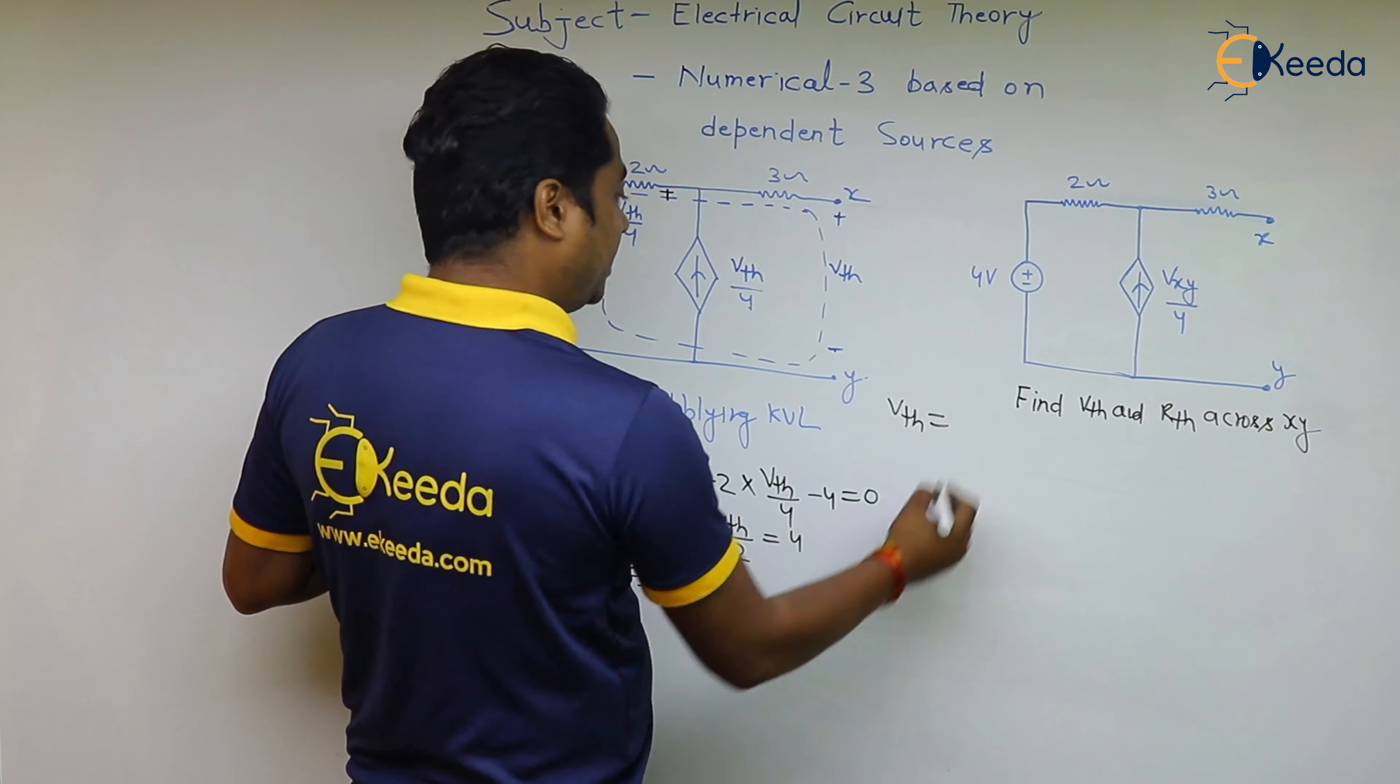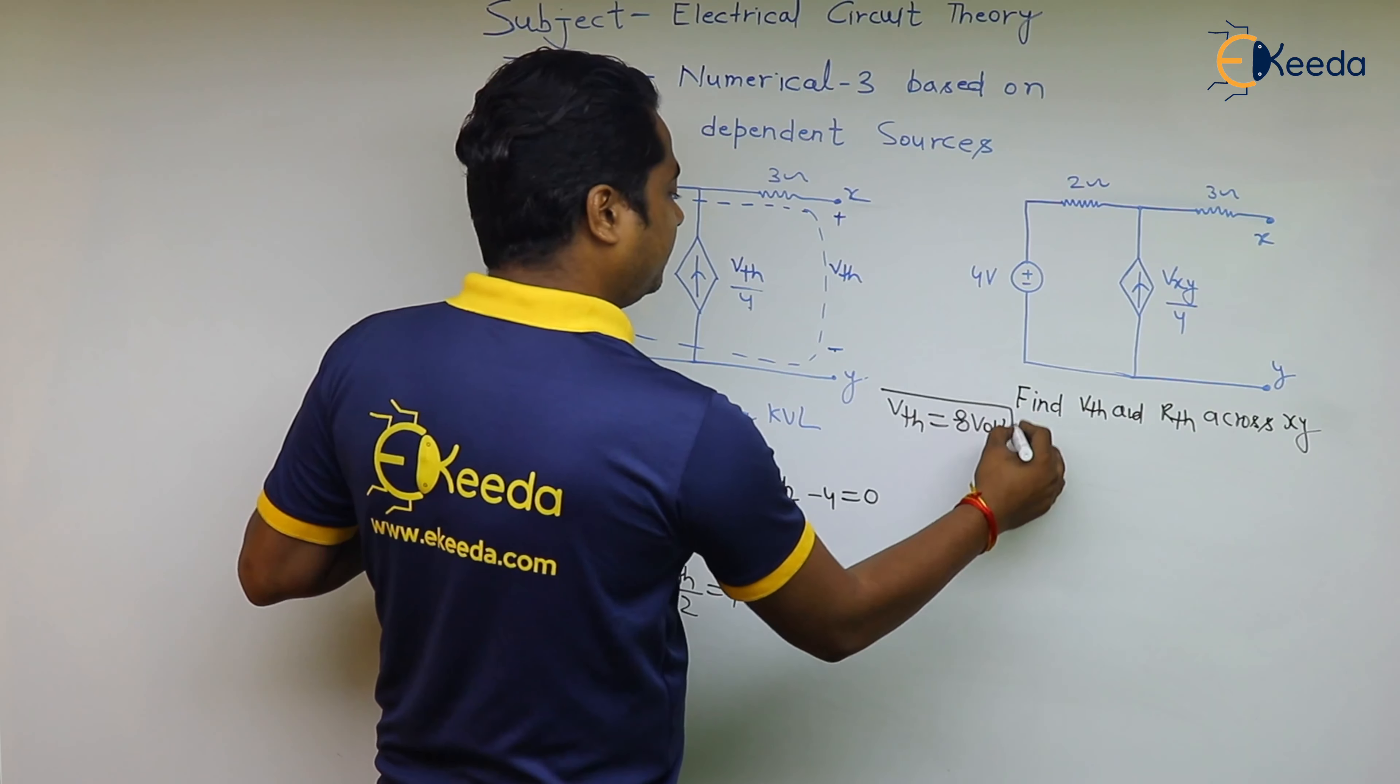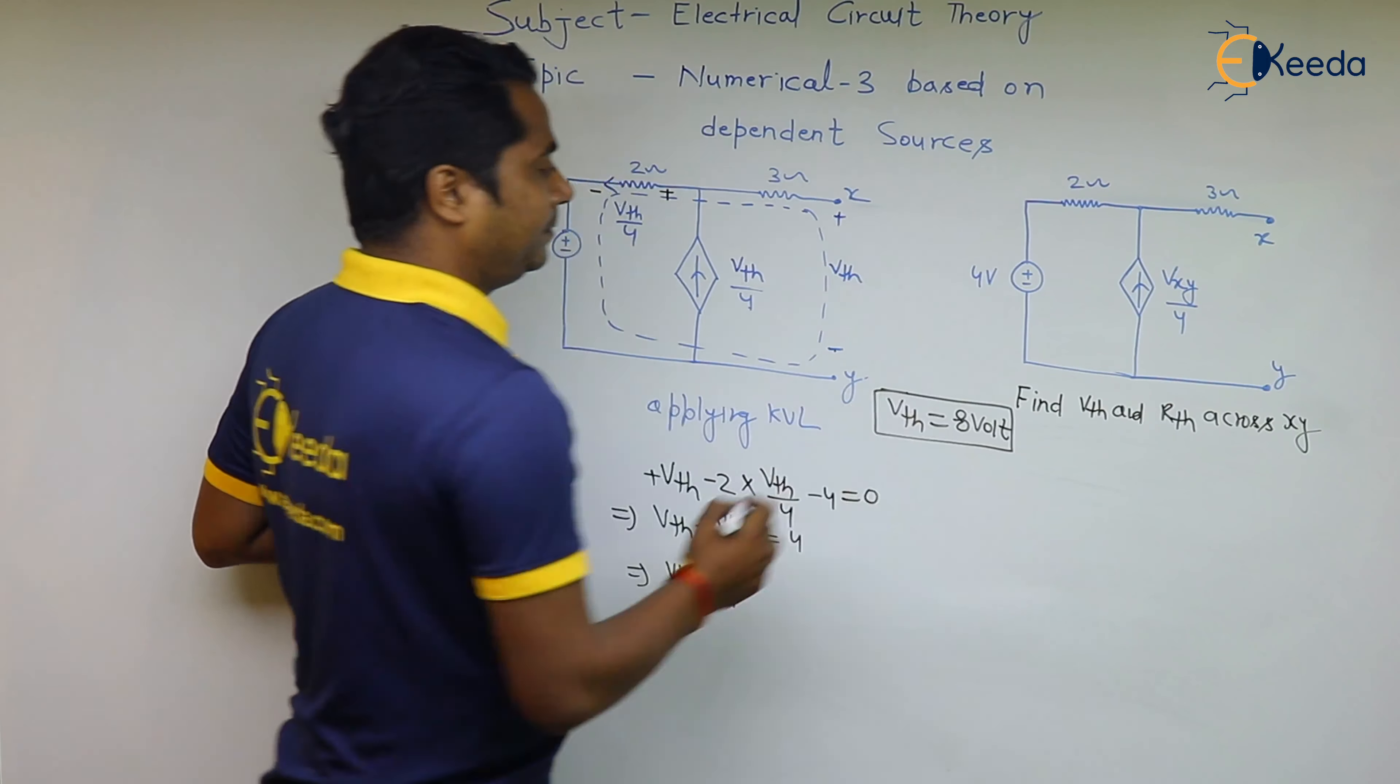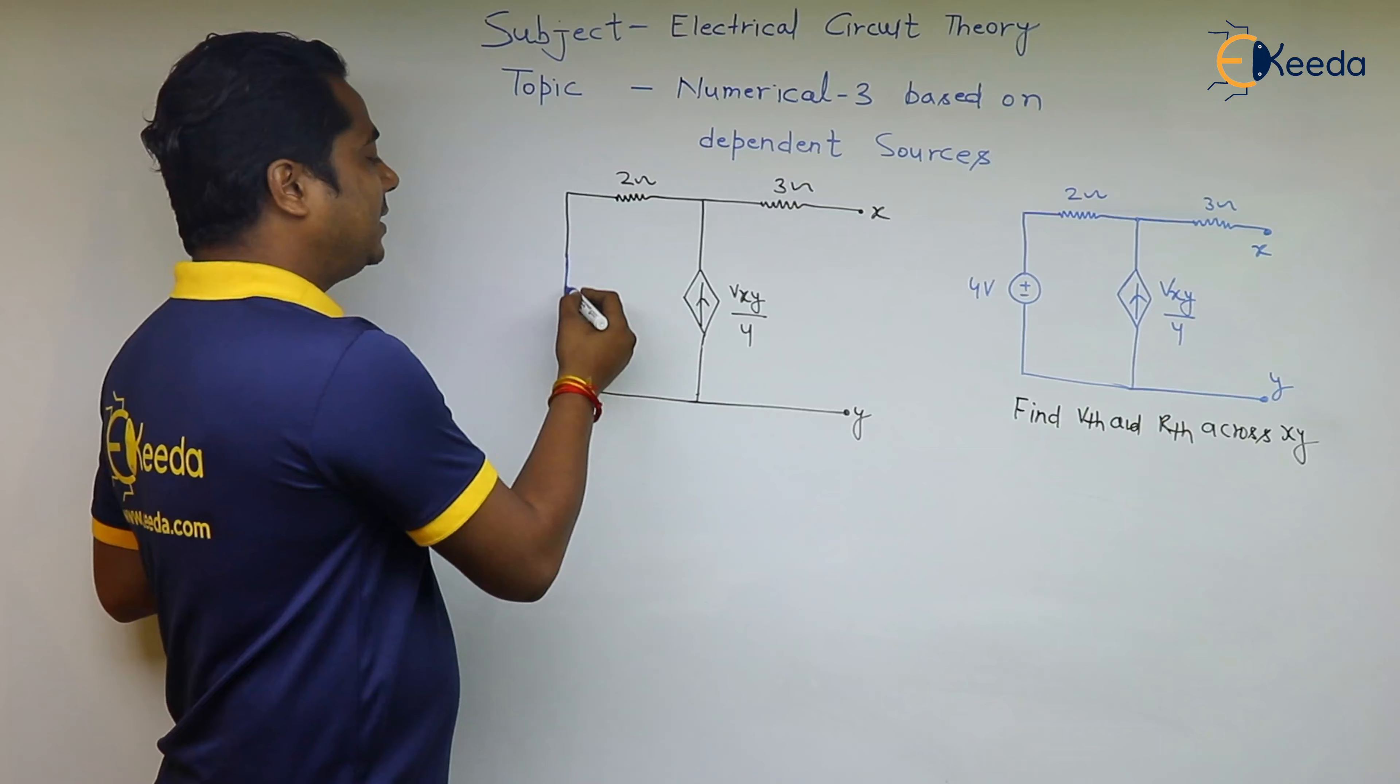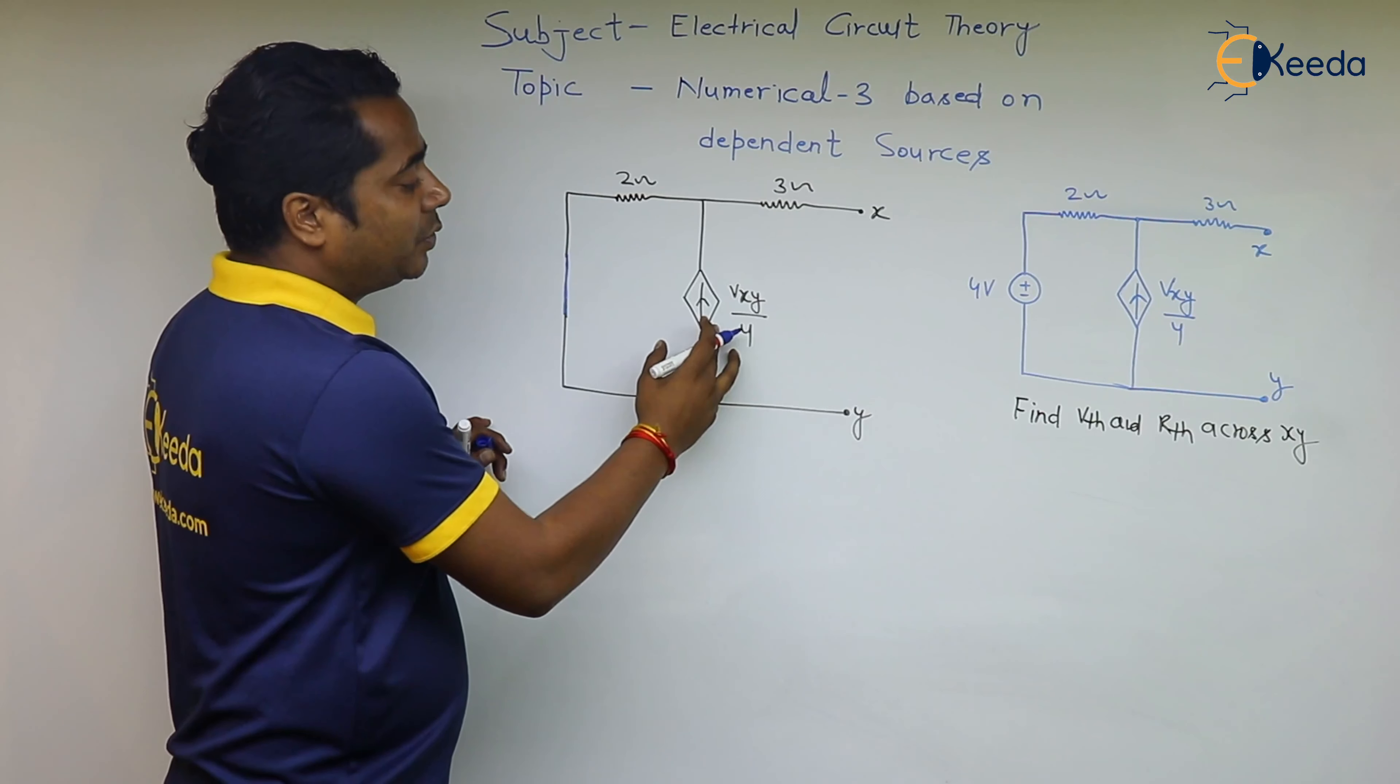Vth by 2 is equal to 4, so the value of Vth will be equal to 8 volts. We can short circuit this voltage source, and this current source is dependent, so we cannot open this.